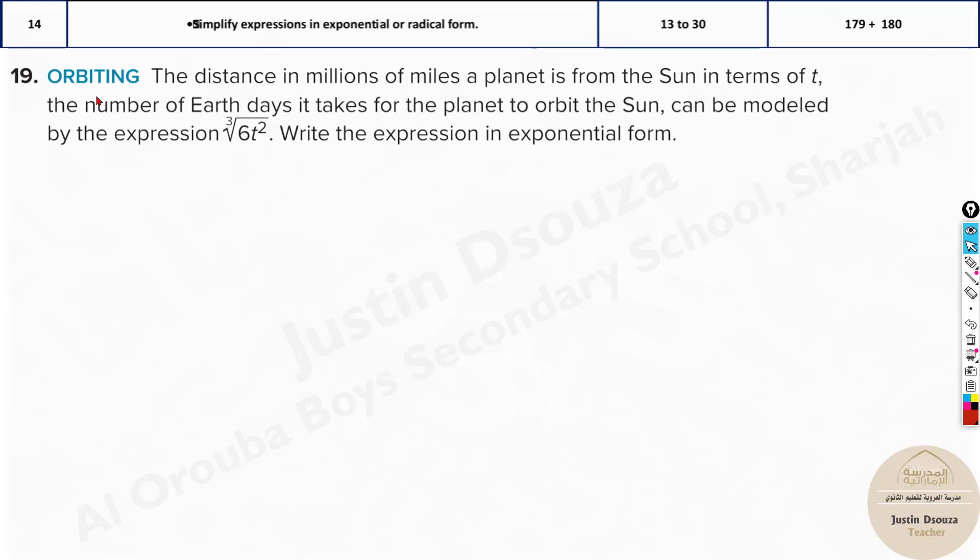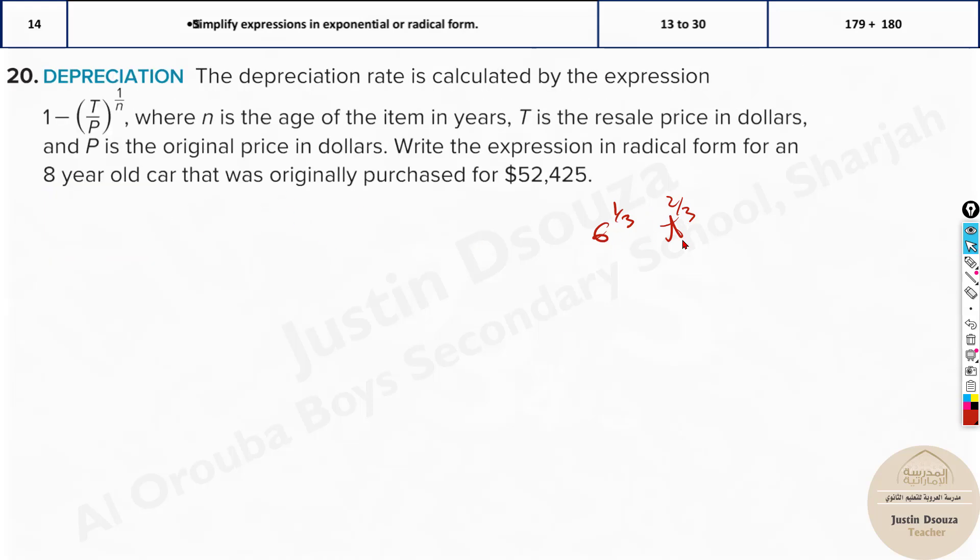A real world problem on orbiting. The distance in millions of miles a planet is from the sun in terms of t. The number of days it takes for the planet to orbit the sun can be modeled by this expression. So, t is the distance, basically. Write the expression in the exponential form. Now, here they have told to express in exponential form. So, write in exponents. It will be 6 to the power 1 third, t to the power 2 by 1 third. That's it. That's the answer. That's the exponential form. Exponential means powers.